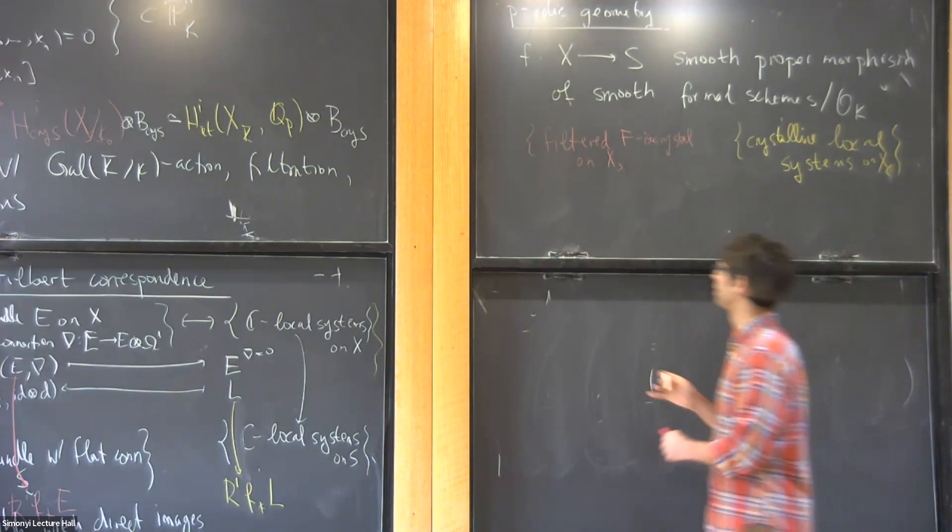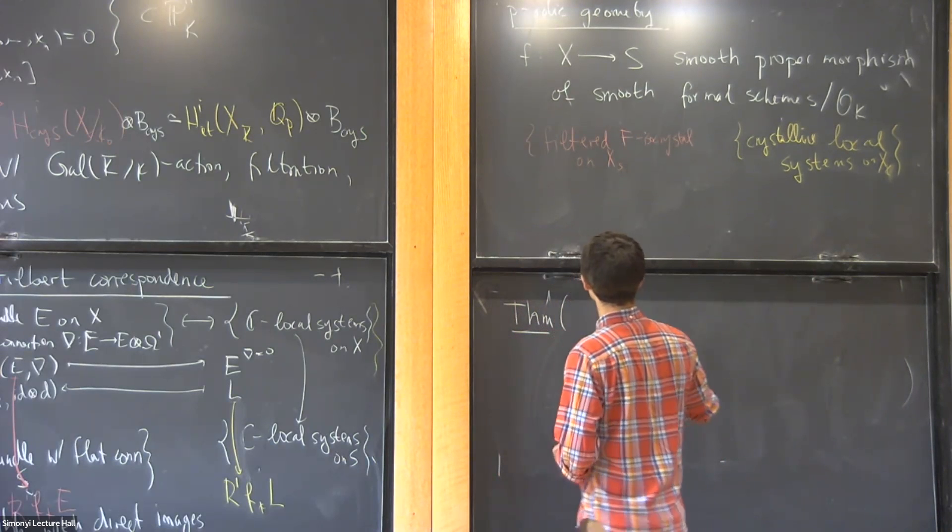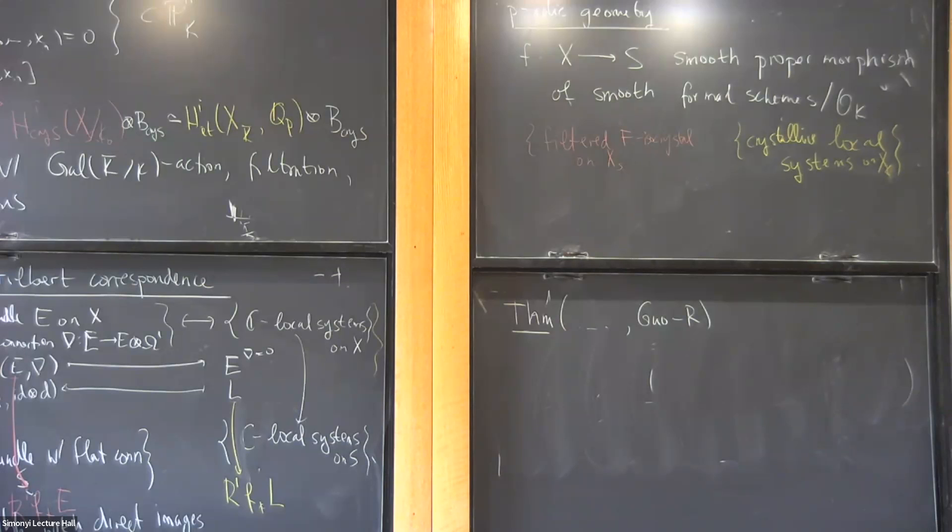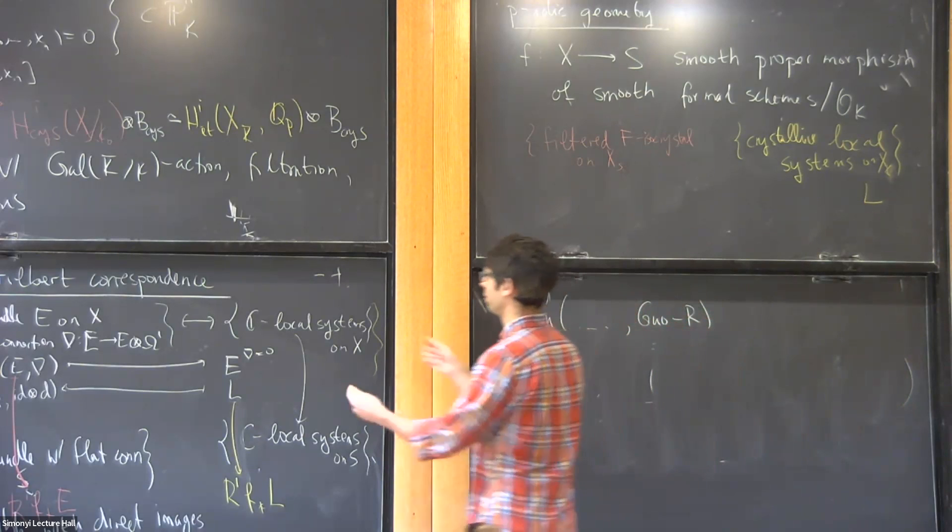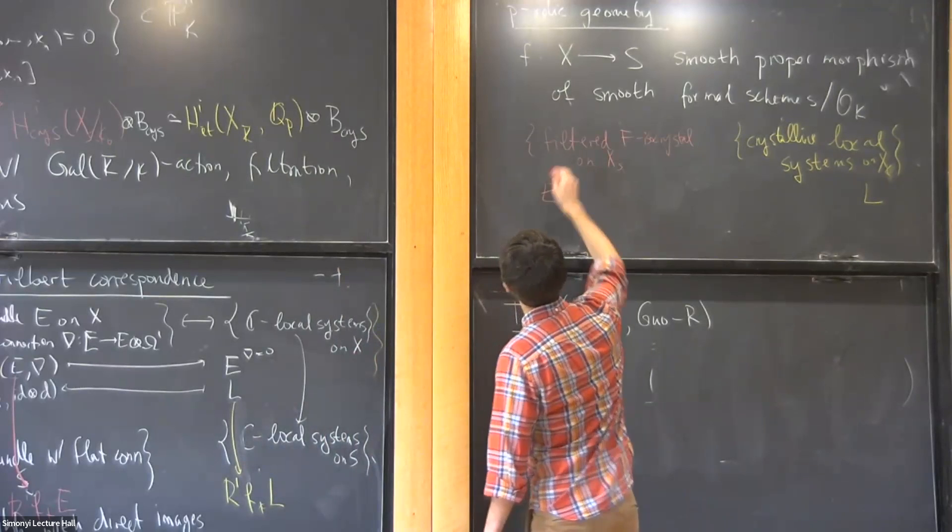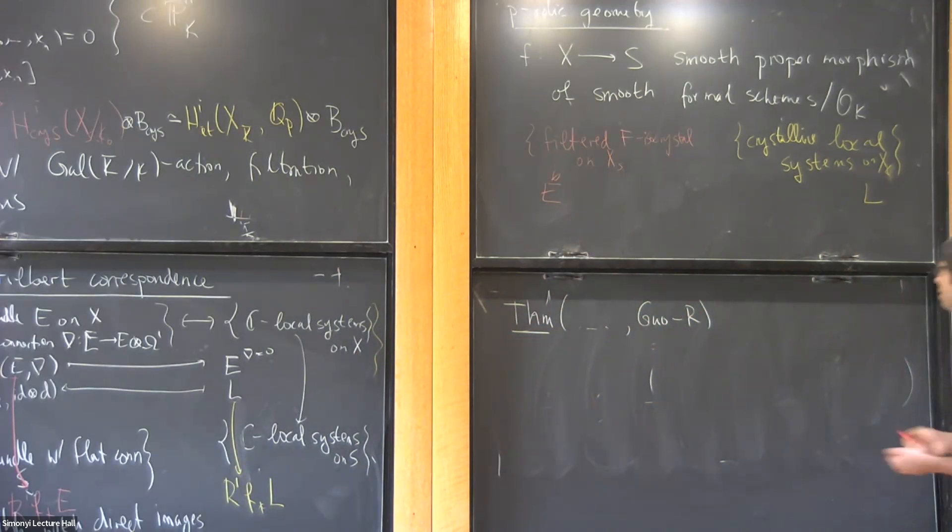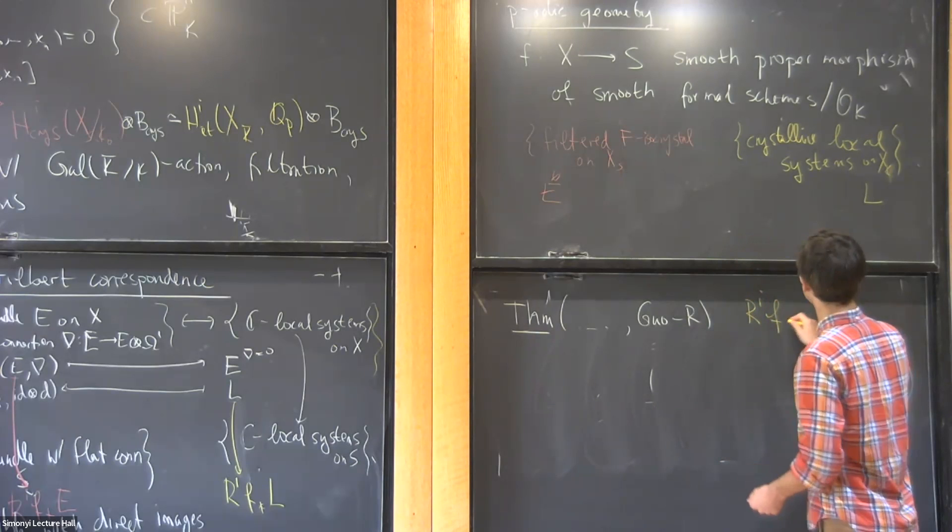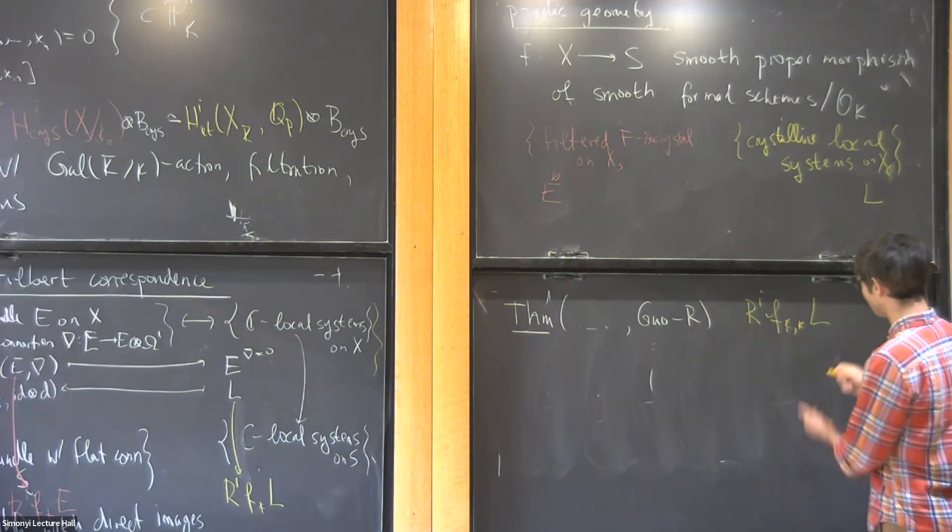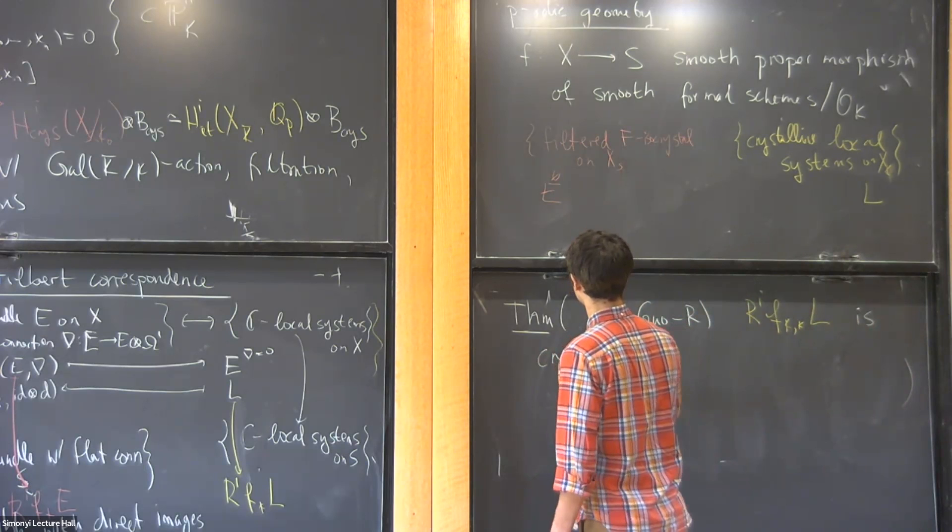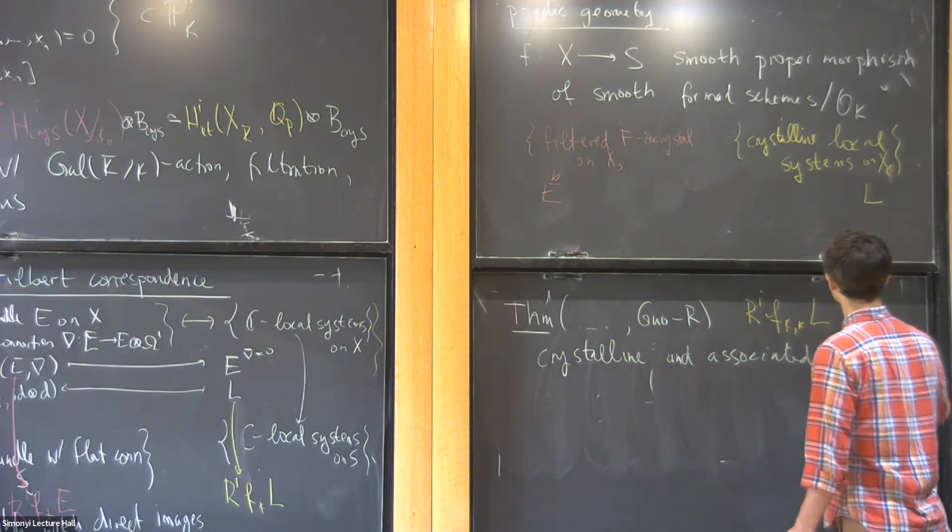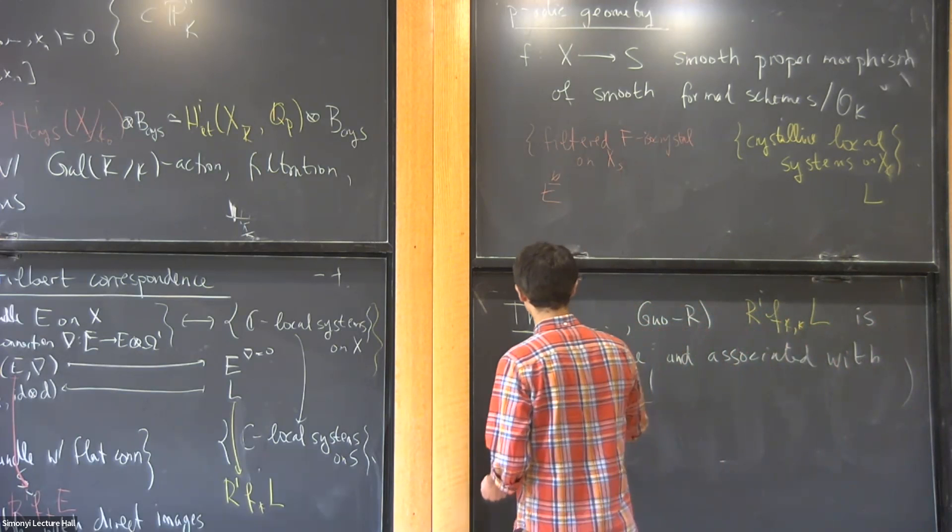And so one theorem that I proved recently in joint work with [collaborator], that is based on a lot of previous work, is that again, we have something similar to what happens over here. So if I start with a crystalline local system, which has a certain associated filtered F-isocrystal in here, then one can take these direct images, and it turns out they're again associated with each other.